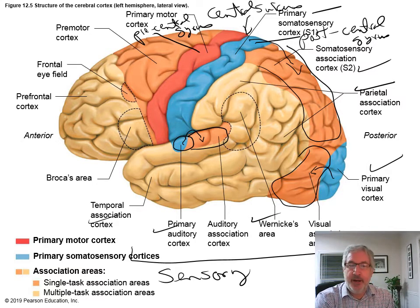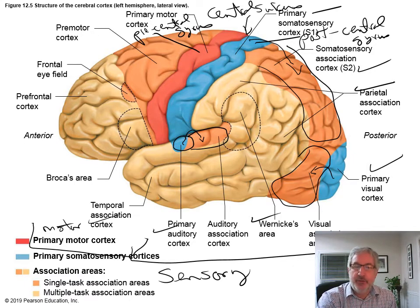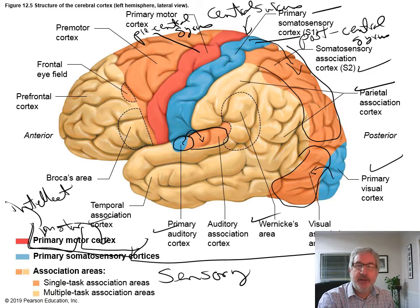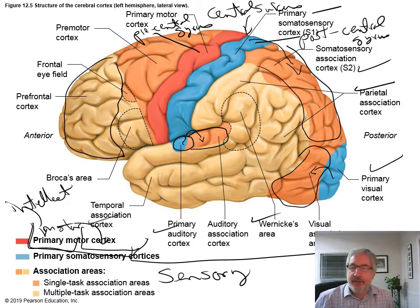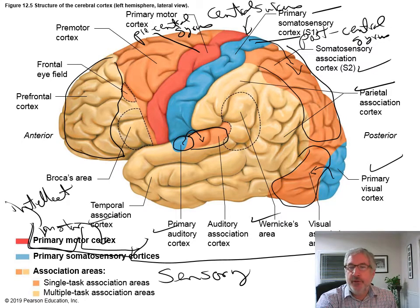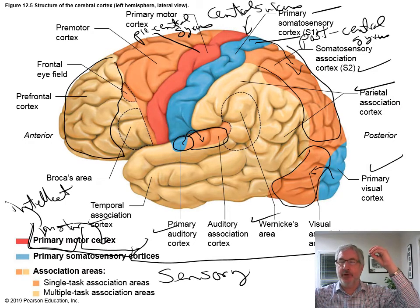Then we have the frontal area. This frontal area has a lot of motor functions. This part is motor, and this part — the prefrontal cortex — is a lot of intellect, personality, and association areas. You have the precentral gyrus — the red area — that's where signals start to be sent down to the body to control skeletal muscles.